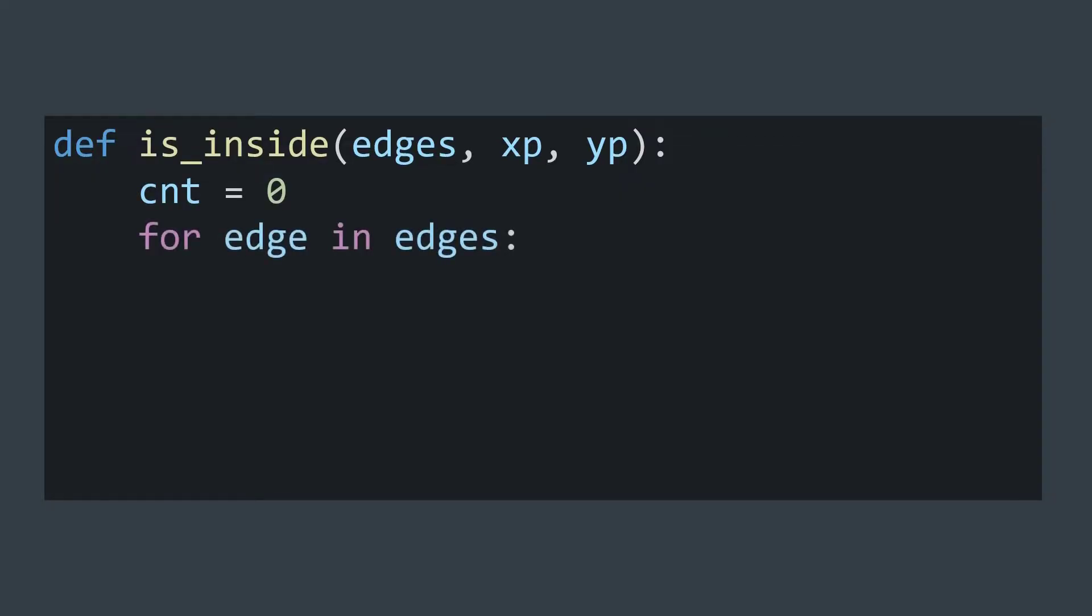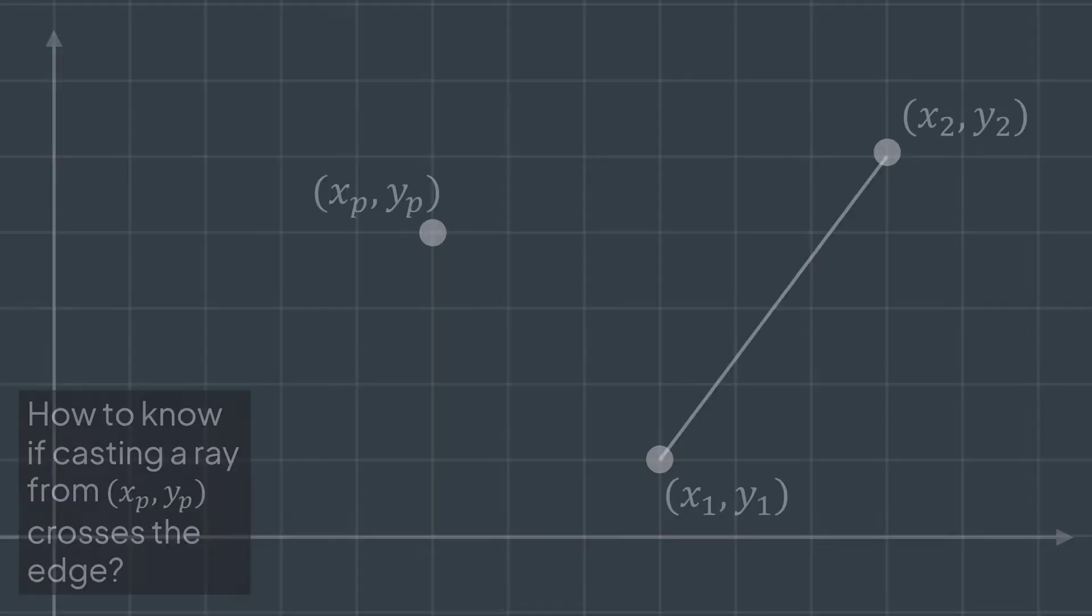Then for each edge, we put the edge in four variables x1, y1, x2, and y2. Now, how to check if the ray starting from xp, yp crosses the edge x1, y1, x2, y2. We can cast a ray from any direction. Let's choose the right side.